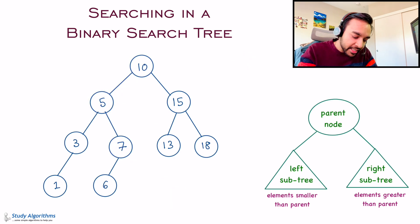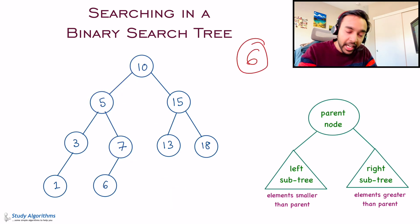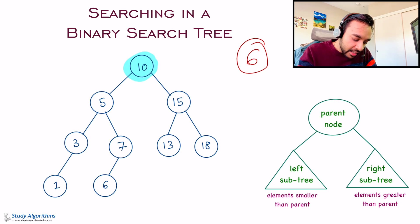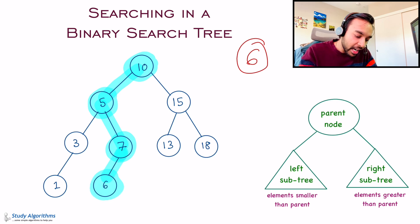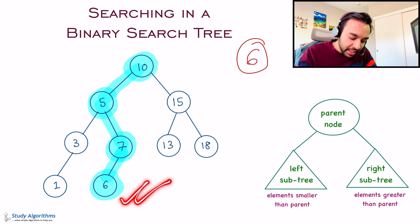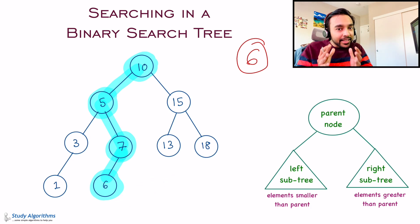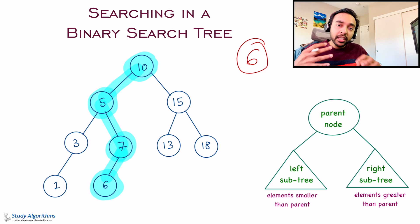One more example — search for element 6. Start with 10, move to the left subtree. Then 6 is greater than 5, so move to the right subtree. Then 6 is smaller than 7, so move to the left subtree. And voila — you found element 6.